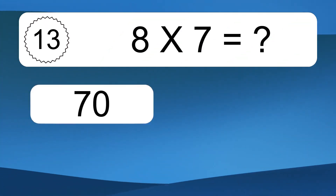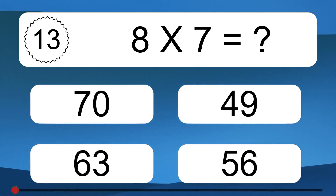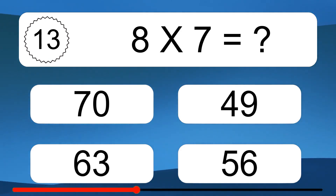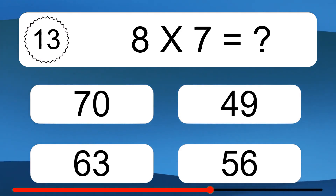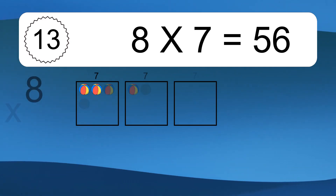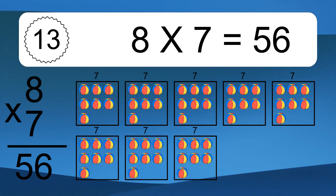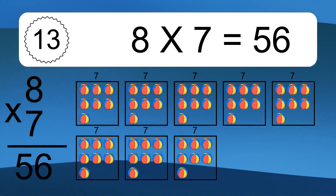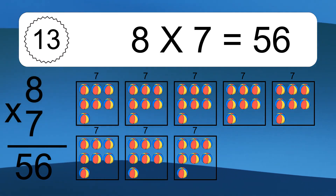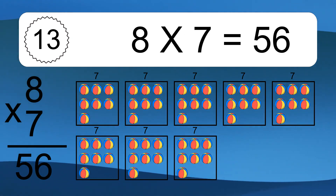8 times 7 equals what? We have 8 boxes, and each box has 7 colorful balls inside. If you count all the balls in all the boxes together, you will have 8 times 7 balls. This equals 56 balls.